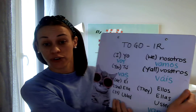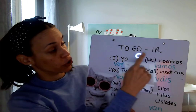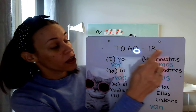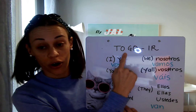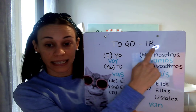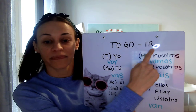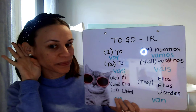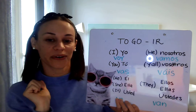Hello! Today we are going to learn about how to use the verb 'to go' in Spanish. The verb 'to go' in Spanish is ir. Let's say it together: ir. Great!